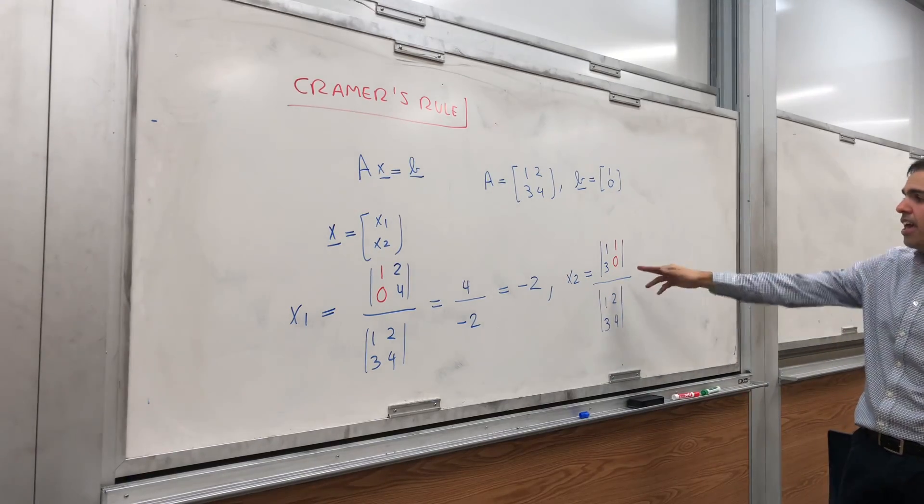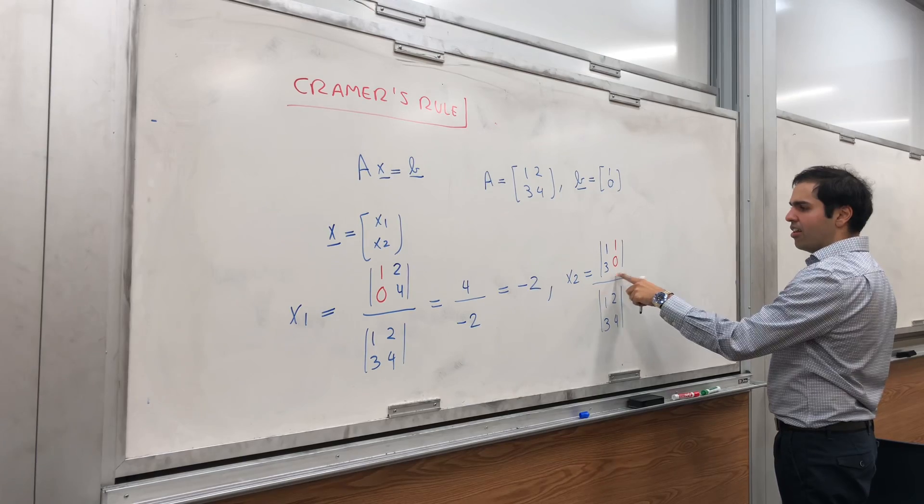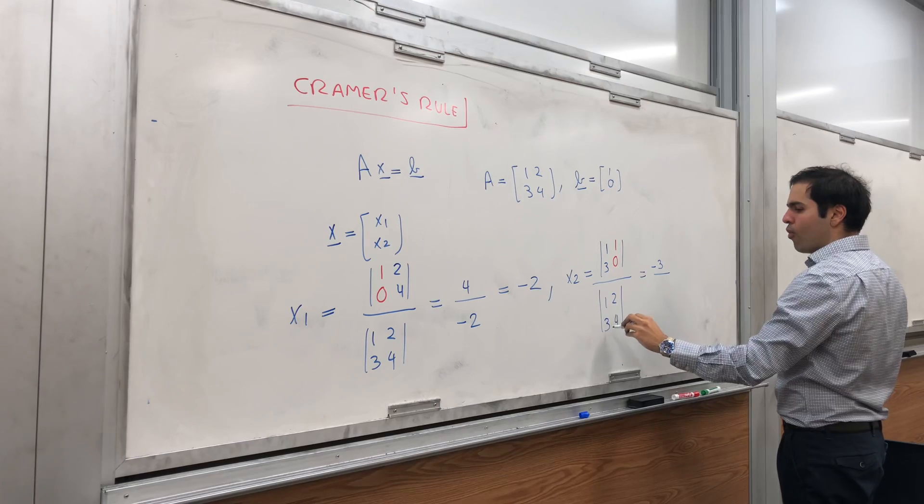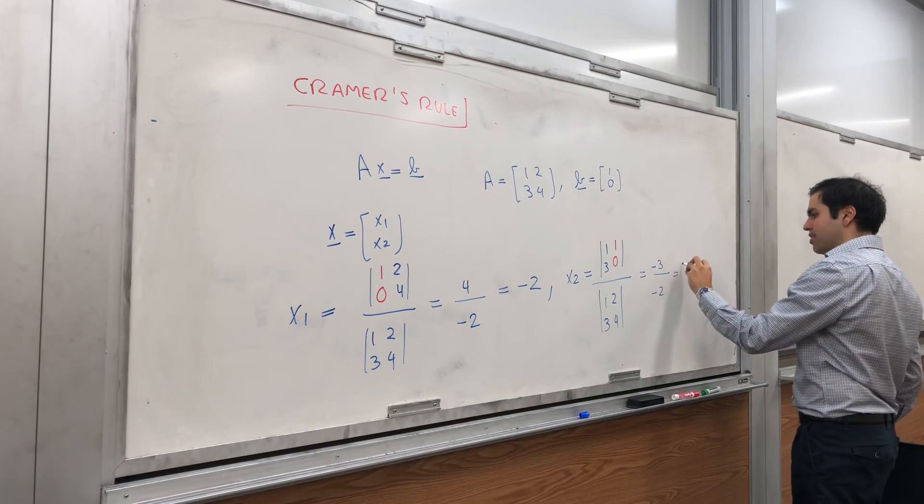So it's like the matrix A except the second column is b. And then you calculate that, so you get minus 3, and then 4 minus 6, that's minus 2, and that's three halves.